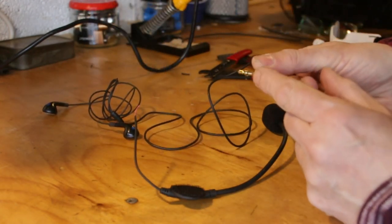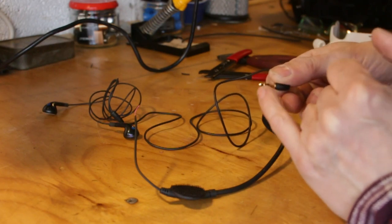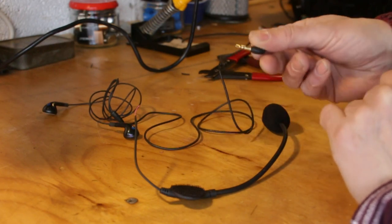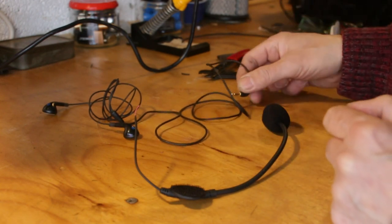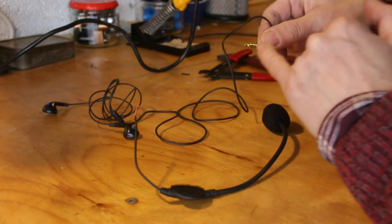I'm going to solder that to a plug. You want TRS - tip ring sleeve. You just want that. You don't want tip ring ring sleeve which has an extra ring on there. You want just the three contacts.